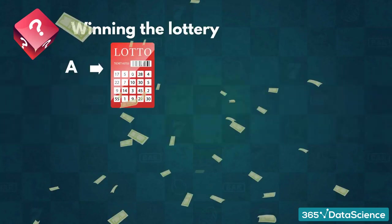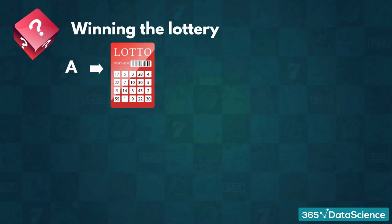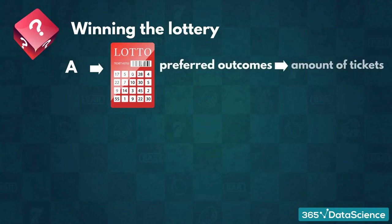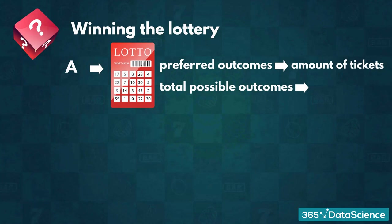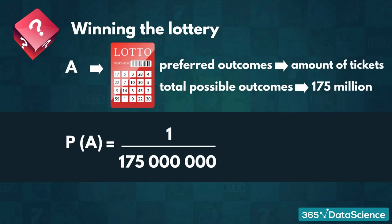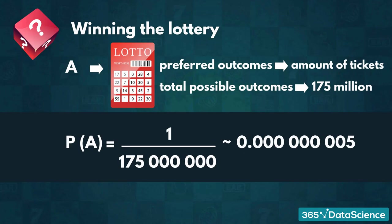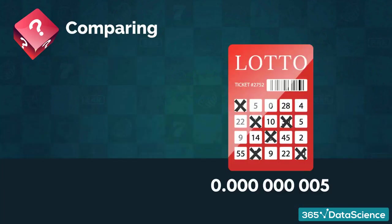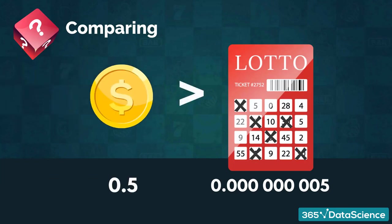What about the probability of winning the US lottery? The number of preferred outcomes we have would be equal to the amount of different tickets we bought. The total number of possible outcomes is just something we will learn how to calculate less than an hour from now. For the moment, just assume that there exist upward of 175 million outcomes for the US lottery. Therefore, each individual ticket only has a probability of winning equal to 1 over 175 million, or approximately 0.000000005. How would your chances improve if you bought two tickets? How about five? I like my odds of flipping a coin a lot more.